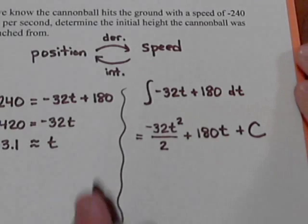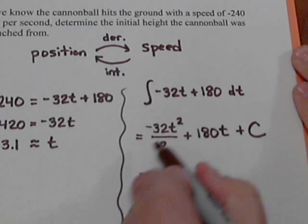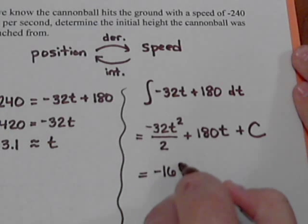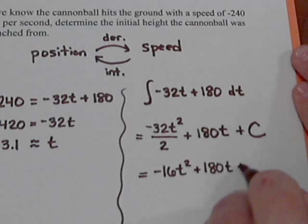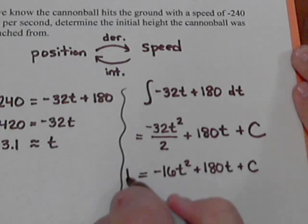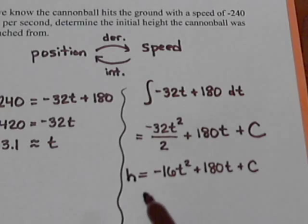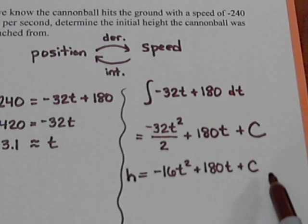Okay, and if we simplify this, negative 32 over 2, that's negative 16 t squared, plus 180 t, plus C. That gives us our height.